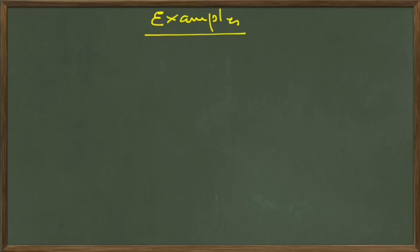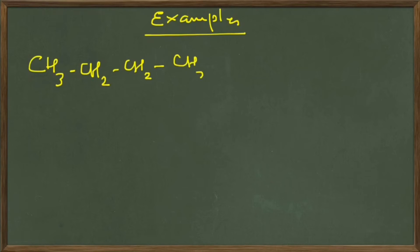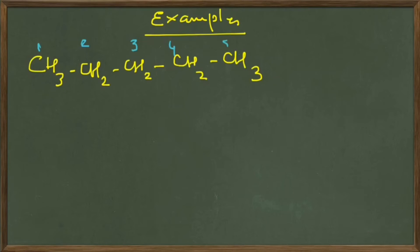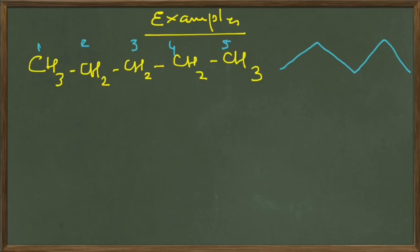For example, we have CH3 CH2 CH2 CH2 CH3. We want to draw the bond line diagram for this. Let's first count the number of carbon atoms in the structure — we have one, two, three, four, five. So our zigzag line should contain five corners. Let's draw it: one, two, three, four, five. That simple it is to draw a bond line diagram.